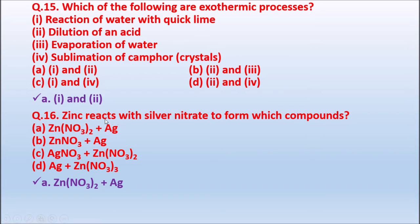Question 16: Zinc reacts with silver nitrate to form which compound? Option A: Zn(NO₃)₂ + Ag. Option B: ZnNO₃ + Ag. Option C: AgNO₃ + Zn(NO₃)₂. Option D: Ag + Zn(NO₃)₂. Zinc reacts with silver nitrate to form zinc nitrate Zn(NO₃)₂ and silver (Ag). The correct answer is Option A: Zn(NO₃)₂ + Ag.